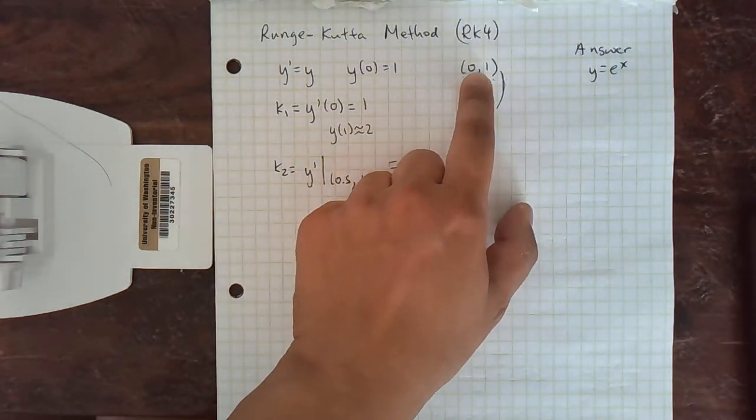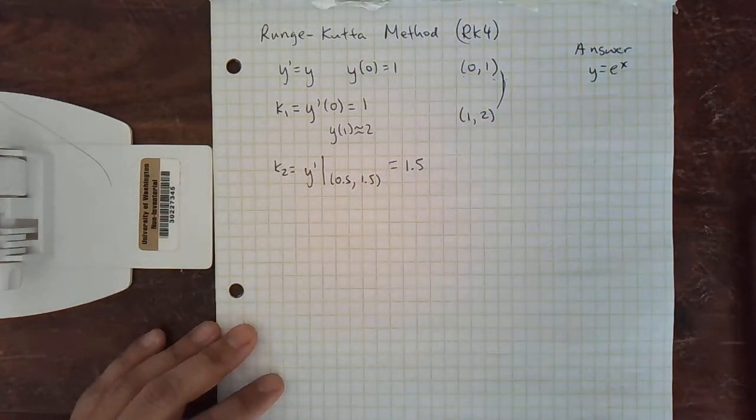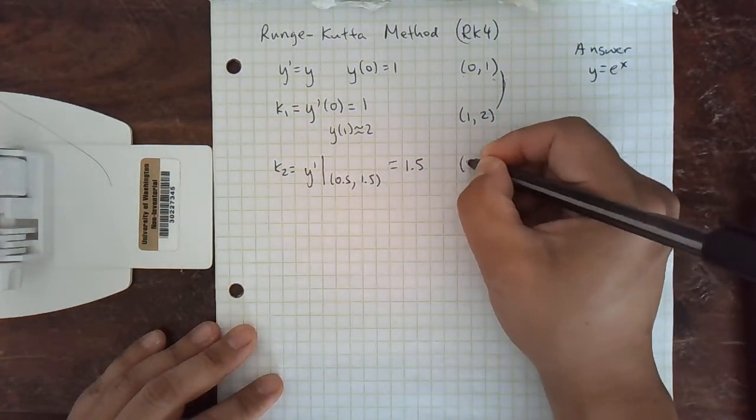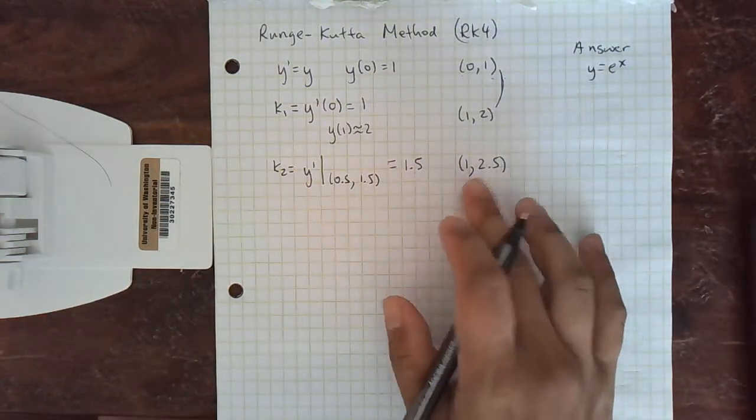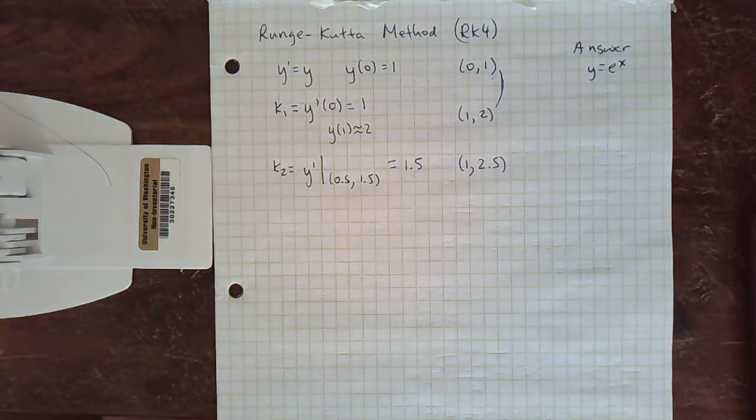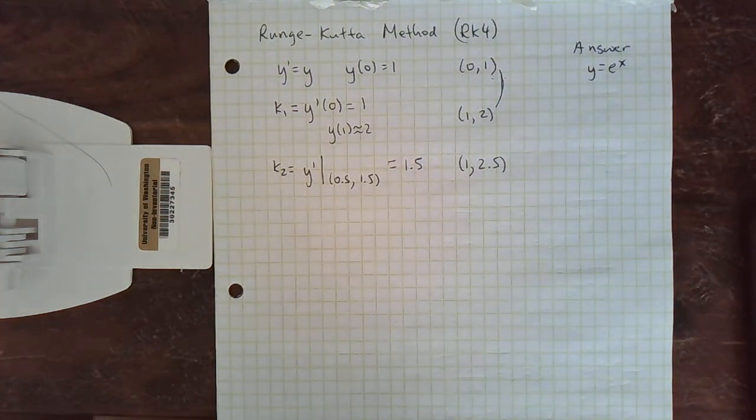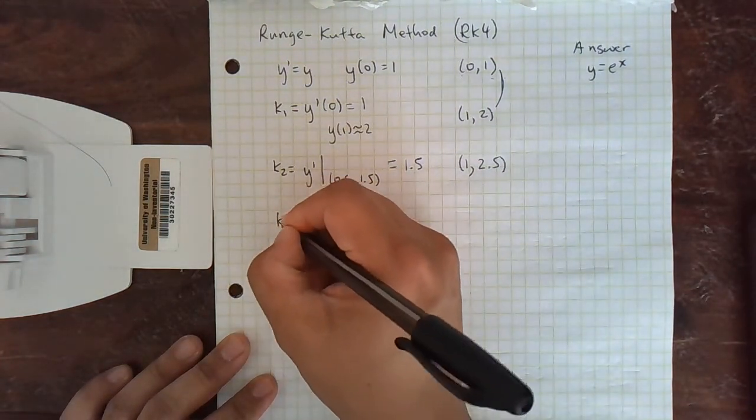And if you started at 0, 1 and traveled a distance of 1 to the right with a slope of 1.5, you would end up at 1, 2.5. This happens to be the same point we got with the improved Euler's method. We got it a different way, though.